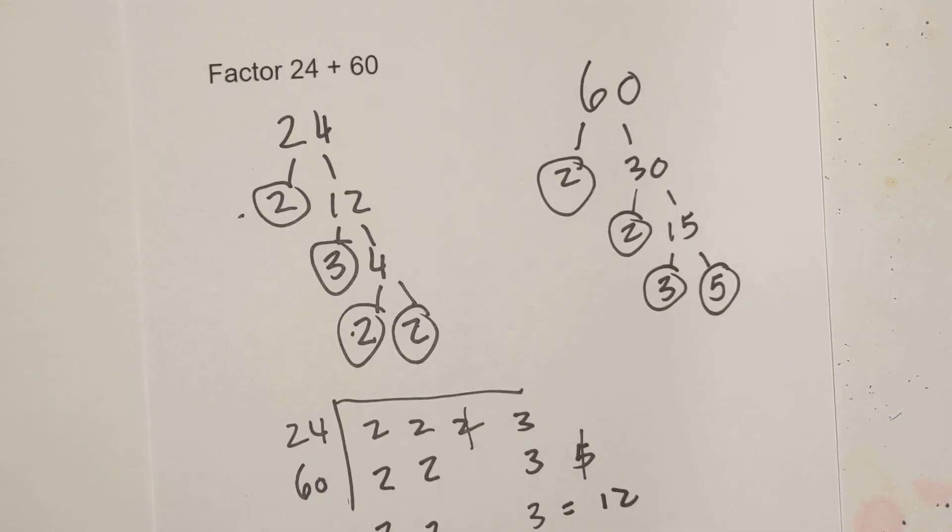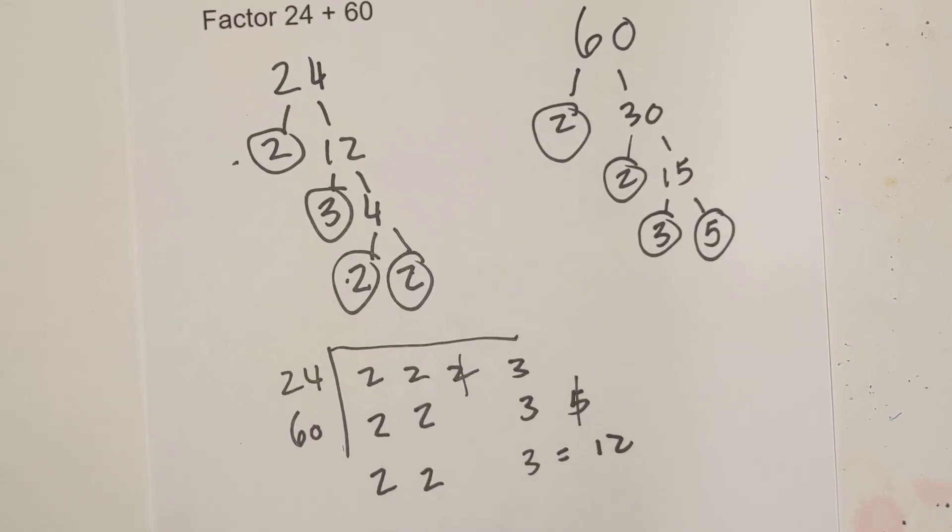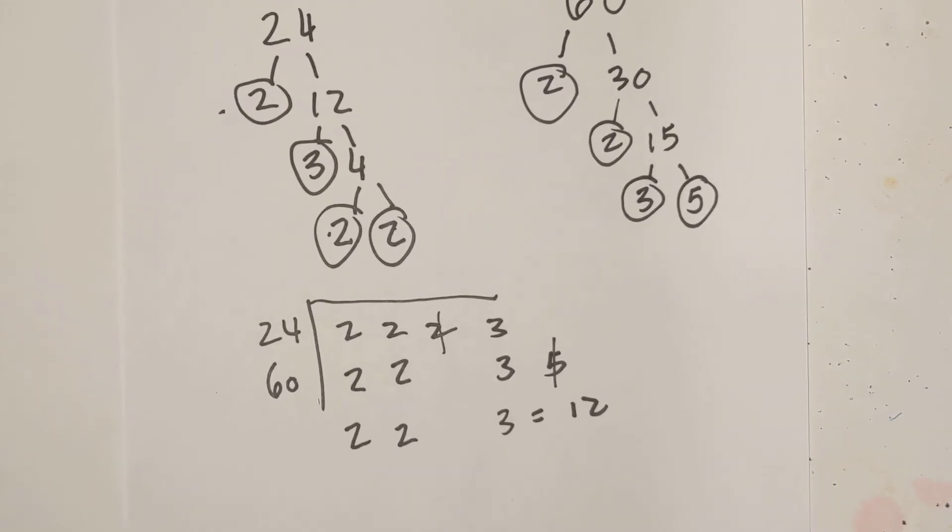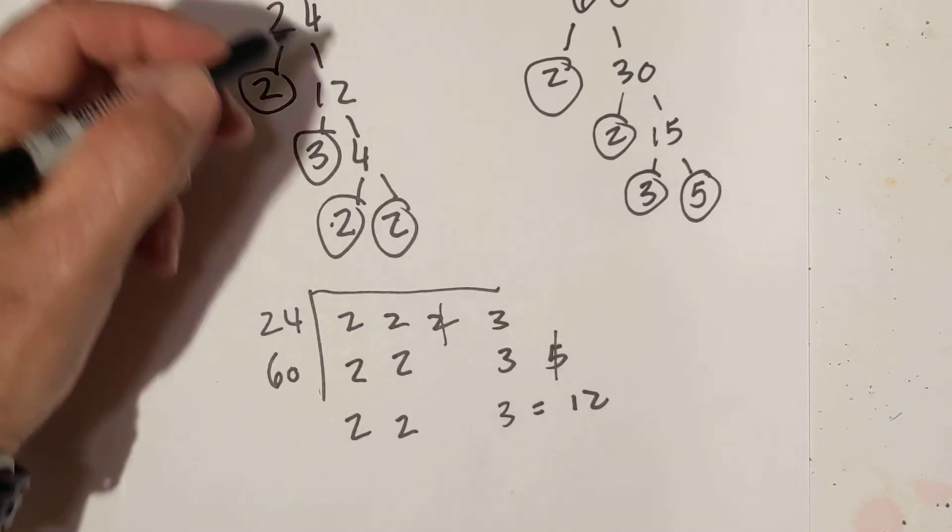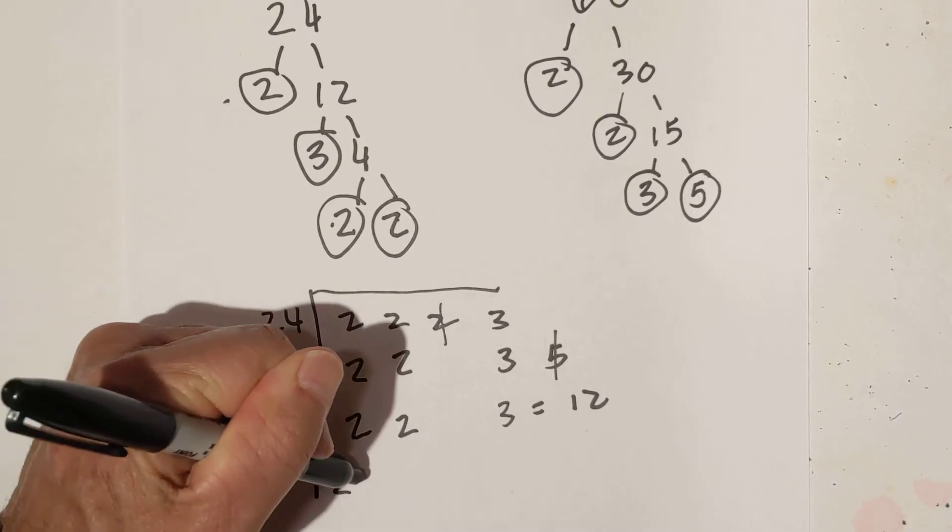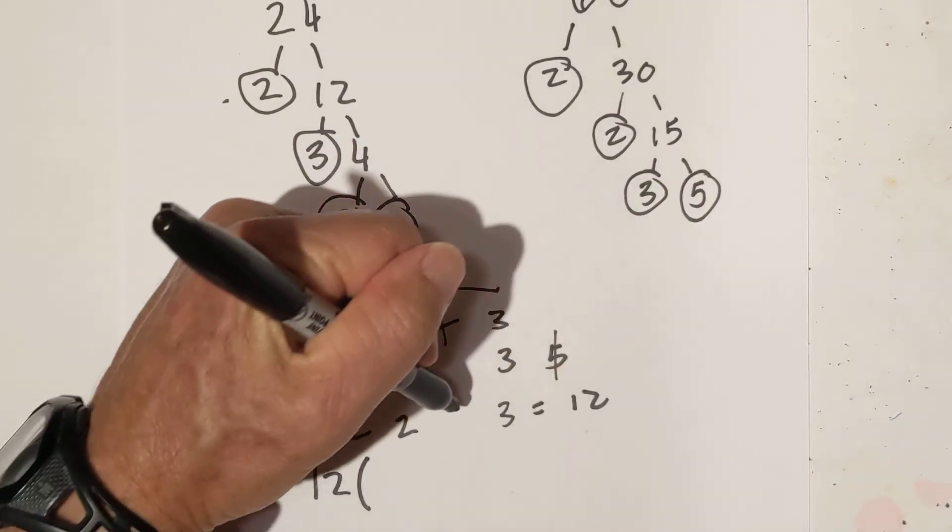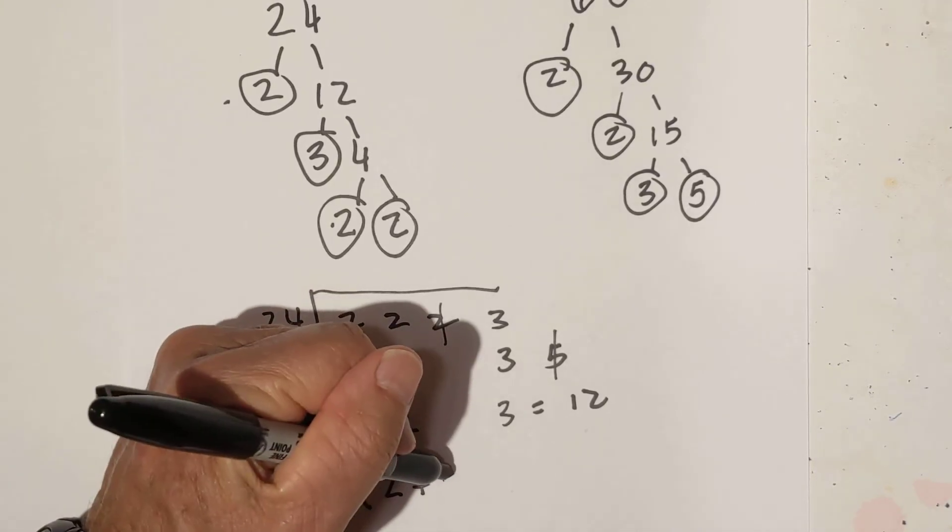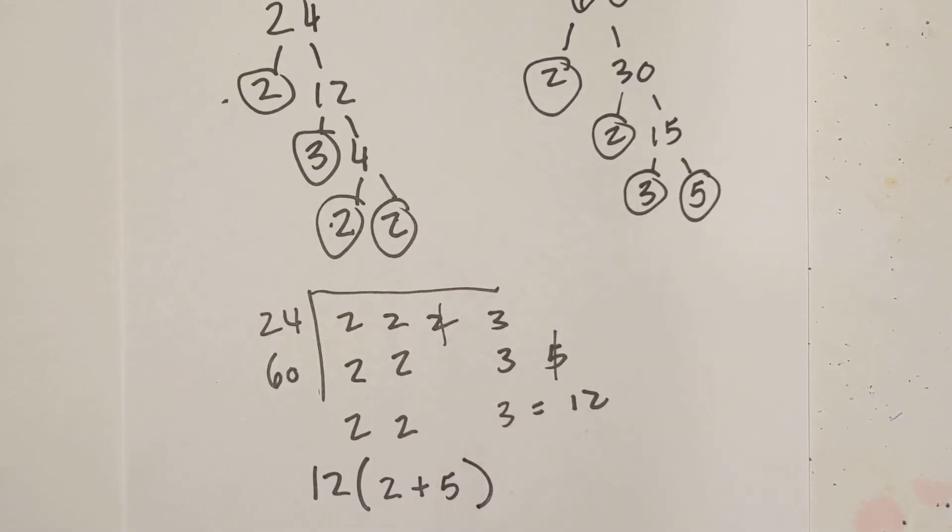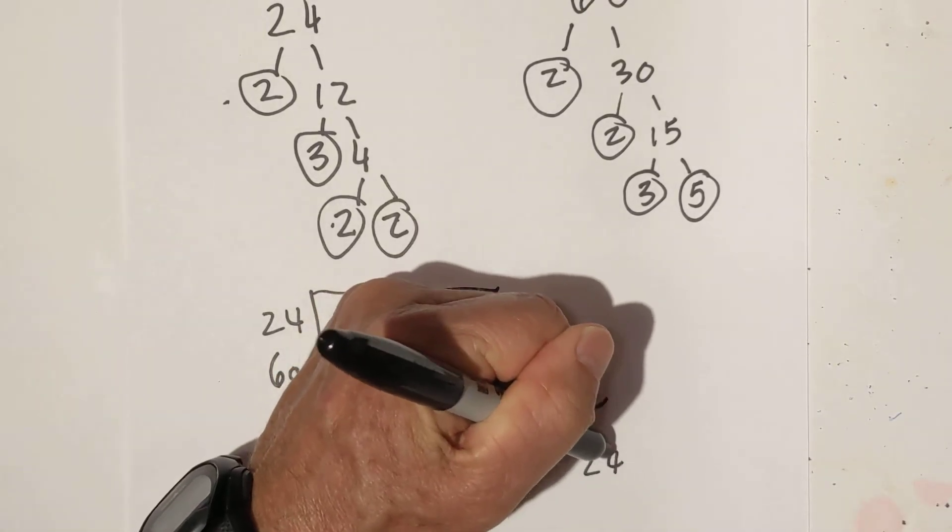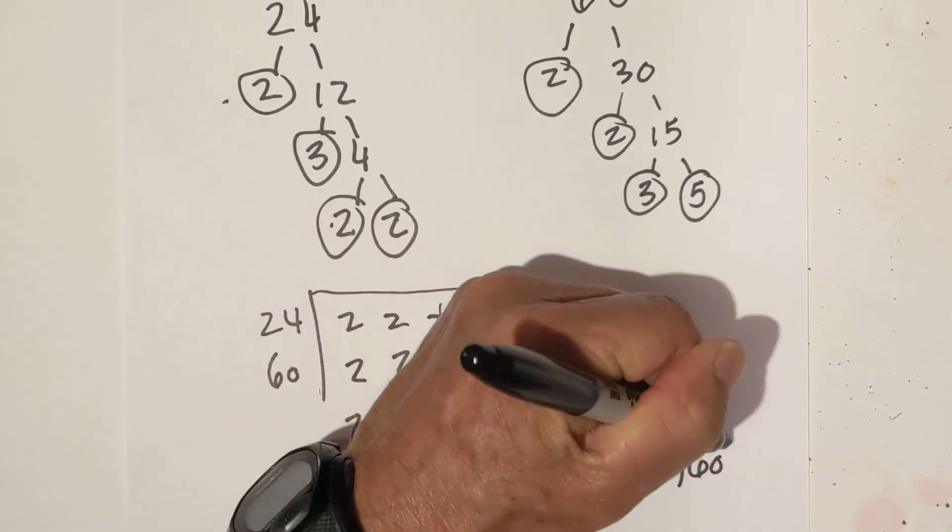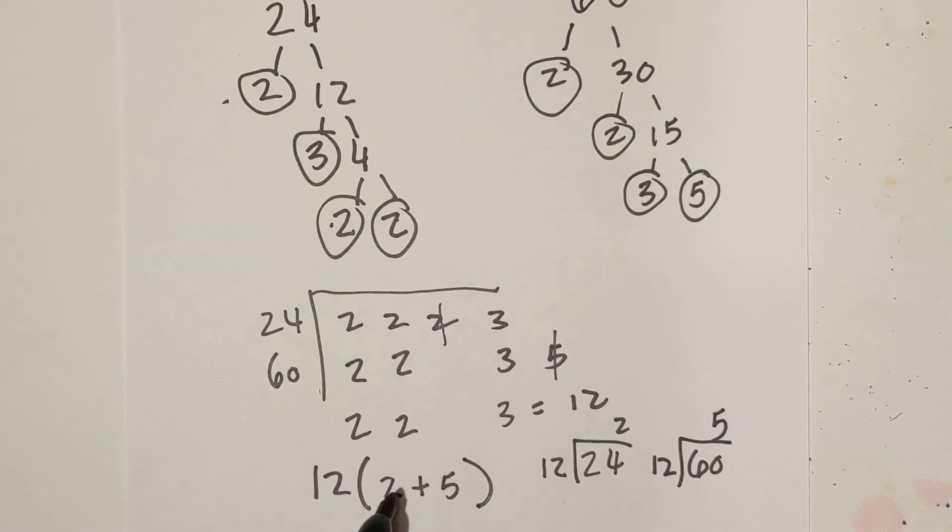So we're down to the greatest common factor. Now all we do is as follows. I'm going to move this up. We divide 24 by, so let's put this 12 outside the parentheses. 24 divided by 12 is 2 plus 60 divided by 12 is 5. And we got the same answer as before. Again, here's where I got the 2. I took 24 because that was the original number, divided by 12 is 2. And then 60 divided by 12 is 5. And that's how I got the 2 and the 5.